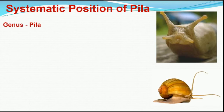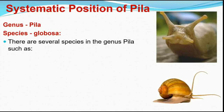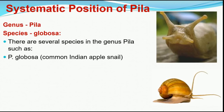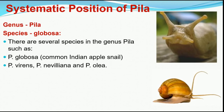At the genus level, genus Pila, species globosa. There are several species of this genus: Pila globosa, commonly called the Indian apple snail, and other species like Pila virens, Pila naveliana, and Pila olea.